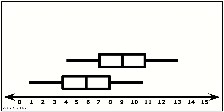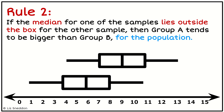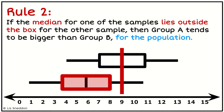Rule number two covers what happens when the groups are a little bit closer — when do I change from making the call to not making the call? This comes from the 50-75% rule: if the median for one of the samples lies outside the box for the other sample, then I can make the call. So if I draw a line for the median of the top group and it doesn't touch the box of the second group, they are far enough apart.